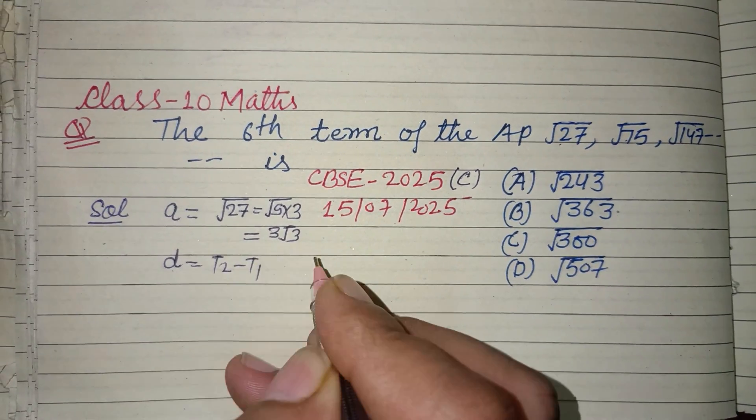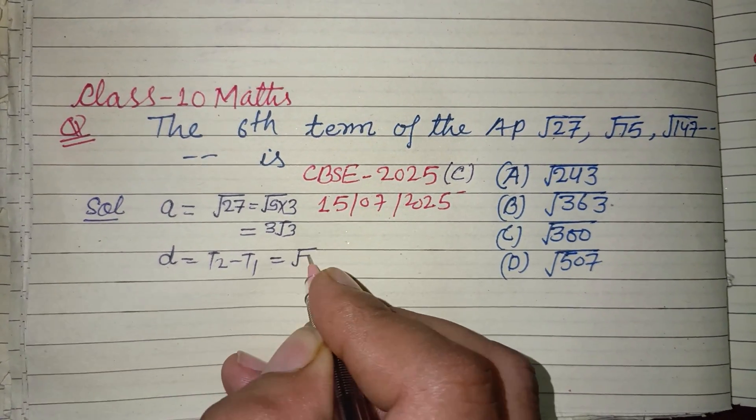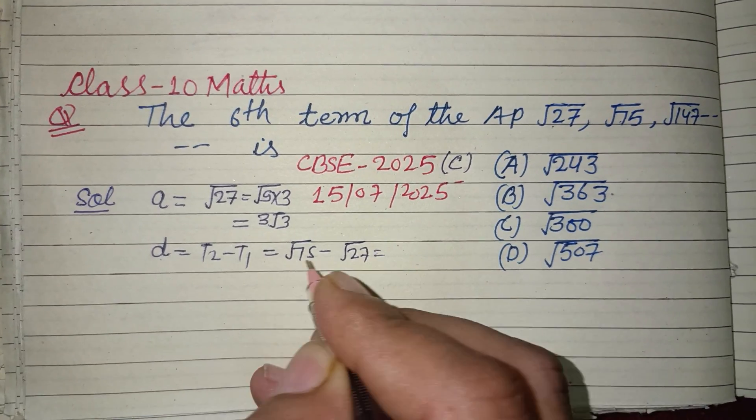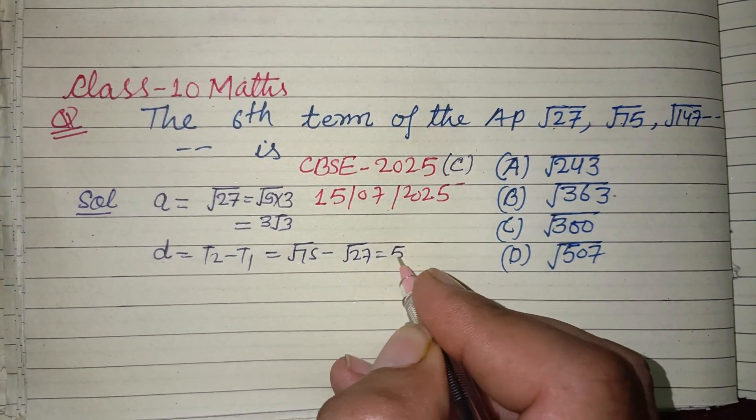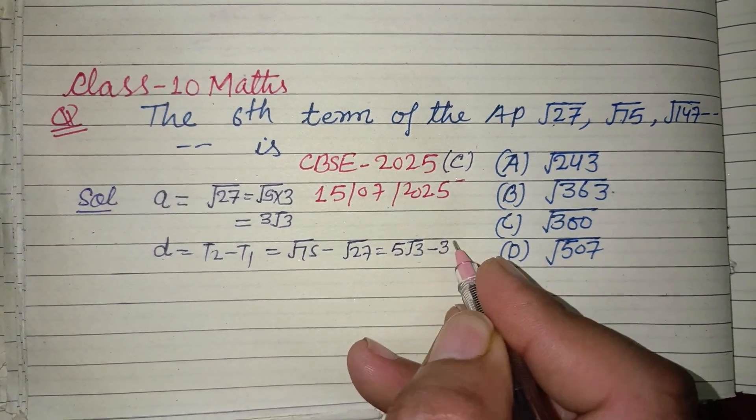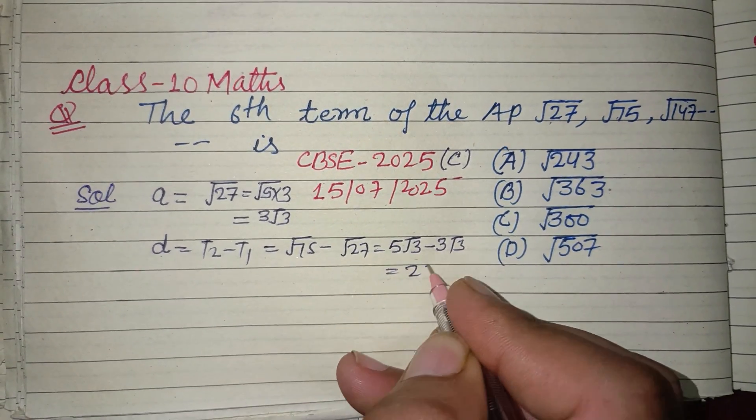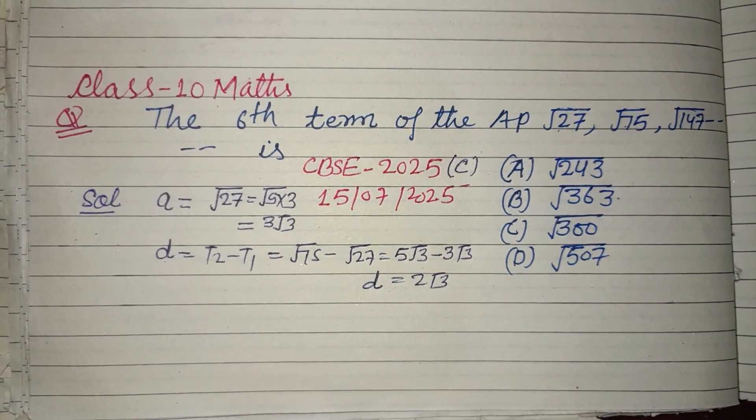t₂ minus t₁, so this is √75 minus √27. √75 can be written as 5√3, and this can be written as 3√3. So this is 2√3. The common difference is 2√3.